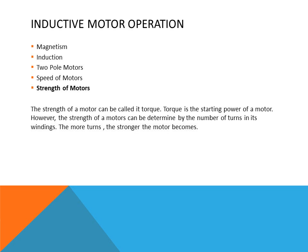The strength of the motor can be called its torque — torque is the starting power of a motor. The strength of a motor can be determined by the number of turns in its windings. The more turns, the stronger the motor becomes.